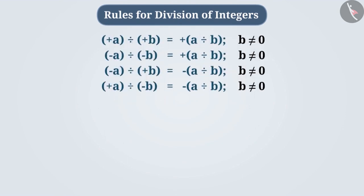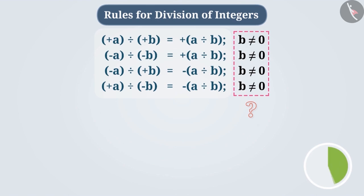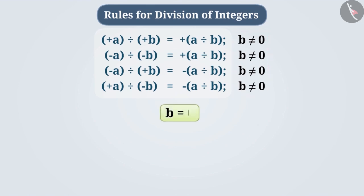Now let's look at these rules. The rules for the division of integers are mentioned in a comprehensive way here. You can understand and study them by pausing the video. For all equations given here, we say B is not equal to 0. This is because the result of division cannot be obtained when B equals 0, since division of any number by 0 is not defined.